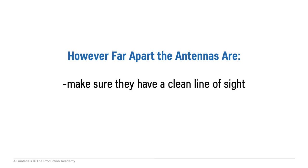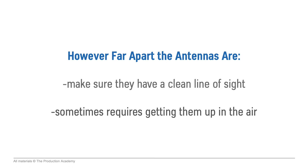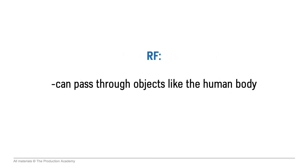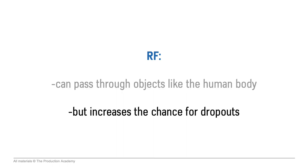However far apart the antennas are, it is important to make sure they have a clean line of sight, which sometimes requires getting them up in the air. RF can pass through objects like the human body, but this definitely increases the chance for dropouts.